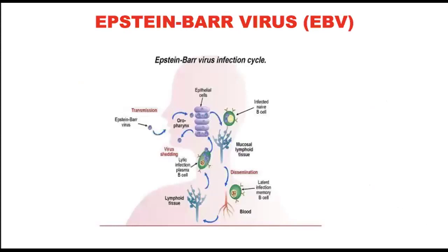Epstein-Barr virus can spread from person to person through exchange of body fluids, specifically saliva — through kissing. That's why infectious mononucleosis is called the kissing disease. But we can also get the virus by sharing personal items such as toothbrushes or eating utensils, especially with those who have EBV.